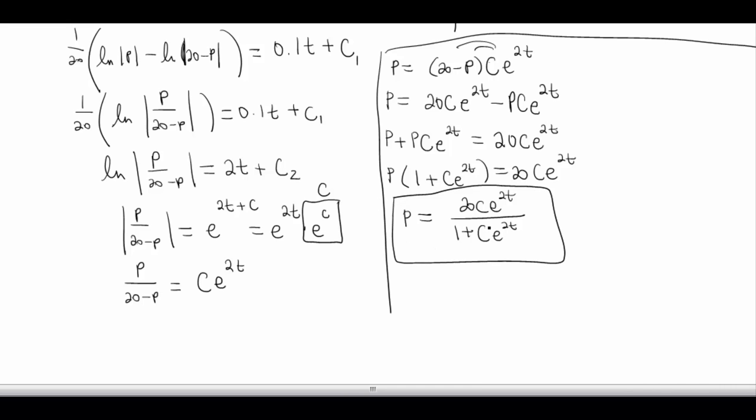Now, there are many ways that you can simplify this. Like if you want to divide numerator and denominator, maybe for some reason by c e to the 2t, there's lots of algebra you can do with this. But for now, this is plenty good enough. Thank you for watching.